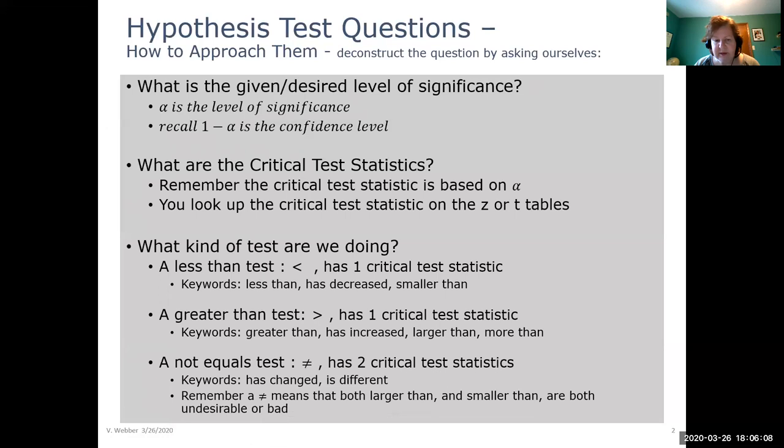We also have our third type of test which is a not equal to test or sometimes called a change or difference test. That would have the not equal to symbol in it. And here we'd have our two critical test statistics, one negative and one positive. And for a not equal to test, what we're really saying is that something could be maybe larger or smaller. And that both those occurrences are undesirable or bad.